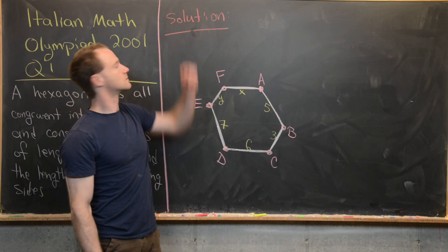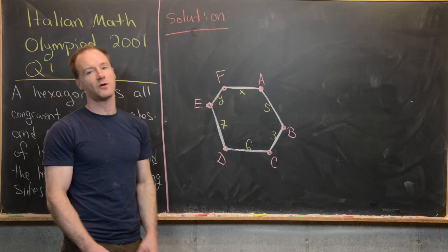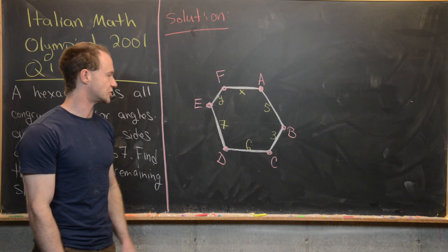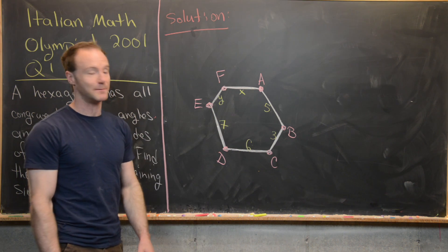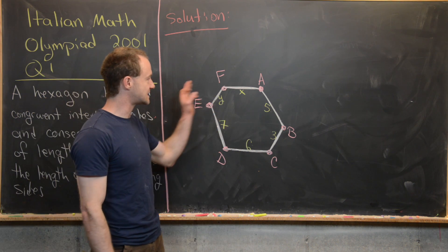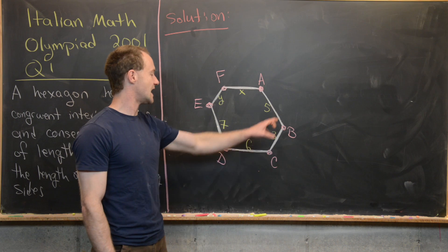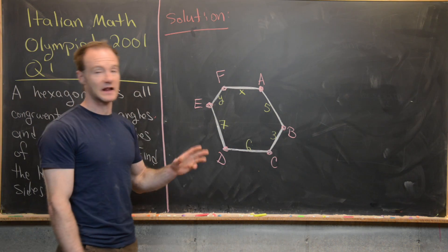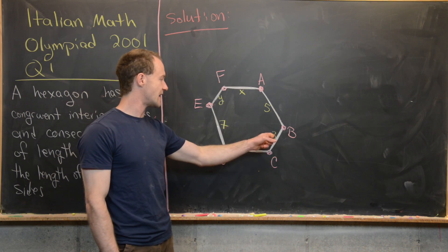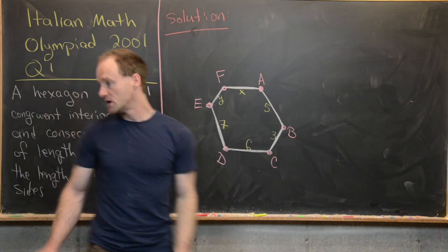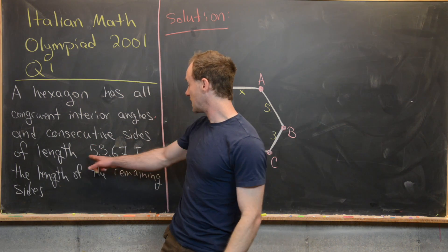Okay, so hopefully those hints were helpful. Now we're ready to look for a solution, so I've gone ahead and drawn a picture. Notice I've got this hexagon with vertices A, B, C, D, E, F, and then I've made my side lengths 5, 3, 6, 7